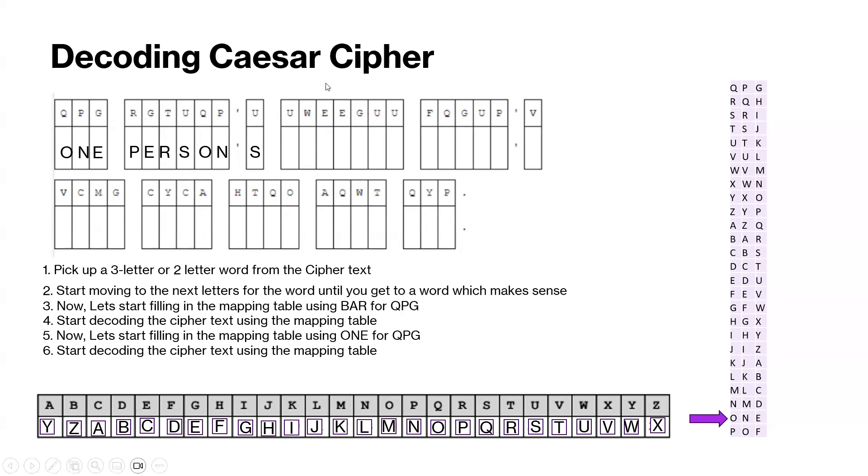Now let's go to the next word. Success. u is s, w is u, both e's are cc, g is e, and uu is ss. It already seems like a phrase that makes sense. One person's success.